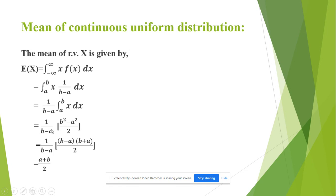Then we will get 1 by b minus a times b square minus a square by 2. Factorize the term b square minus a square as b minus a into b plus a. b minus a terms get cancelled. The mean of continuous uniform distribution comes out to be a plus b by 2.